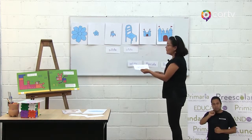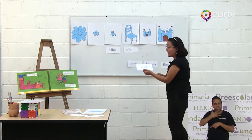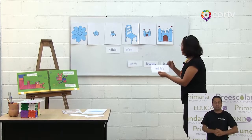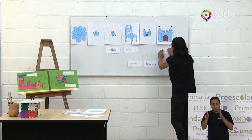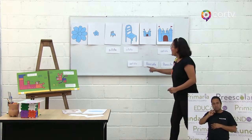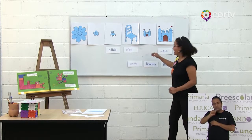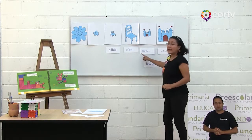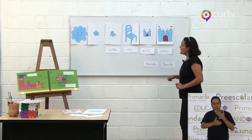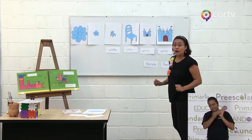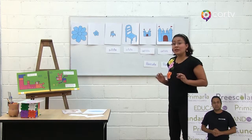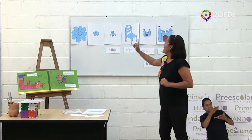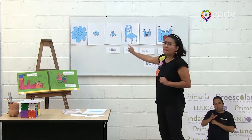¿Dónde va a estar ubicada la palabra castillote? ¿Se refiere a un castillo pequeño o grande? Muy bien, se refiere a un castillo grande. Castillote. ¿Y castillito? Muy bien, hace referencia al castillo pequeño. Castillito. Nos quedan dos palabras, tienen que ser las palabras de flor. Acuérdate que estamos abordando diminutivo y aumentativo. Entonces, ¿cuál será la palabra de la flor más grande? ¿Y cuál será la palabra de la flor más pequeña?